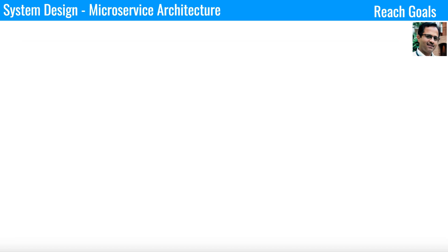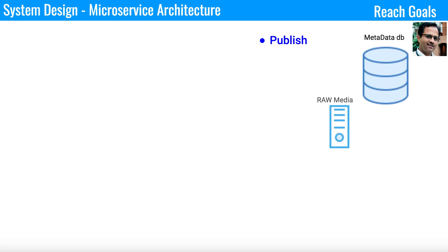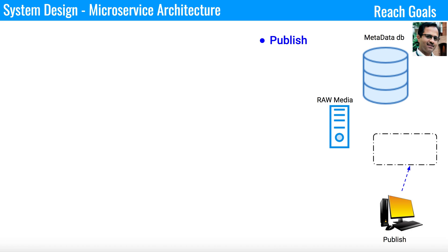Now we'll see the end-to-end system design with the full architectural diagram. For Spotify, Apple Music, or YouTube Music, three things are involved: publish, distribute, and search and listen. In the publish phase, we have a metadata DB and a raw media server. Publishers — Spotify, label owners, or title owners — upload their audio or video to the raw media server while metadata is stored in the metadata DB, all done through the upload service deployed in a Docker container within an auto-scaling group.